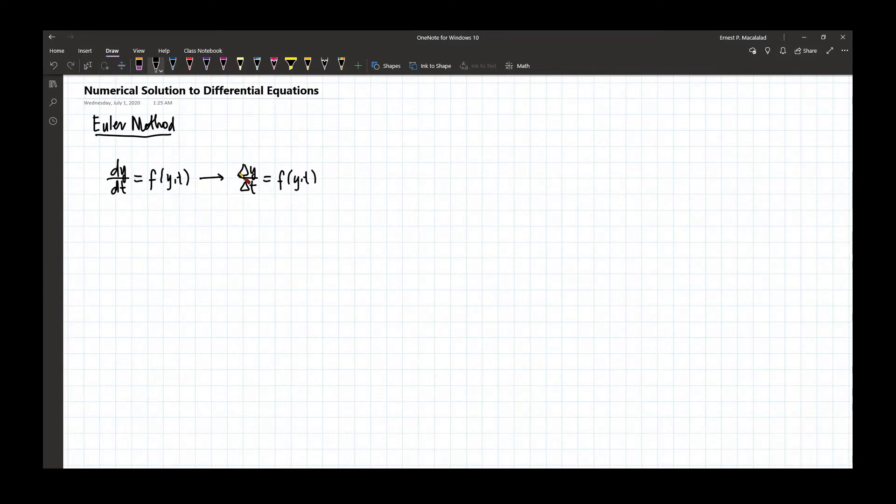So we already know that this is actually equal to y at a later increment i plus 1 minus y_i, and this is equal to f times delta t.